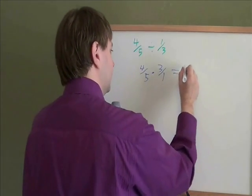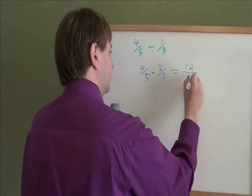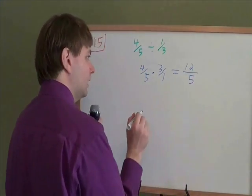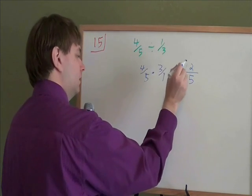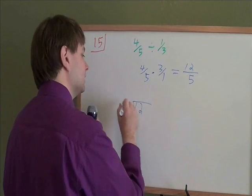4 times 3 is 12. On bottom, 5 times 1 is 5. And then that's our answer as an improper fraction. If they want a mixed number, we're going to have to actually divide that and see what it gives us.